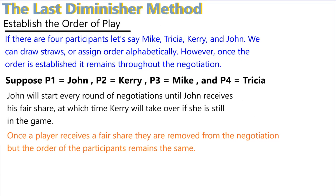Here is an example for establishing the order of play. If we have four participants — Mike, Tricia, Kerry, and John — we could draw straws to establish order or simply assign order alphabetically. However, once this order is established, we must stick to it throughout all rounds of negotiation. Following alphabetical order, John is the first player, Kerry is the second, Mike is the third, and Tricia is the fourth. This is like a batting order — you follow that same order over and over.